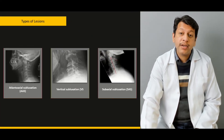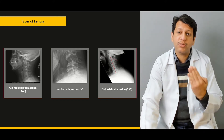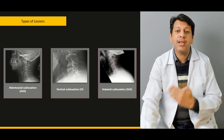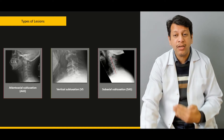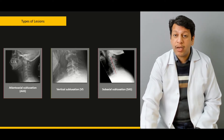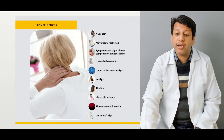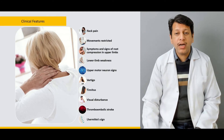Then we will be looking at the X-rays of the cervical spine — especially the lateral flexion and extension views — and what the different findings are that we need to pick out to diagnose a case of rheumatoid arthritis.